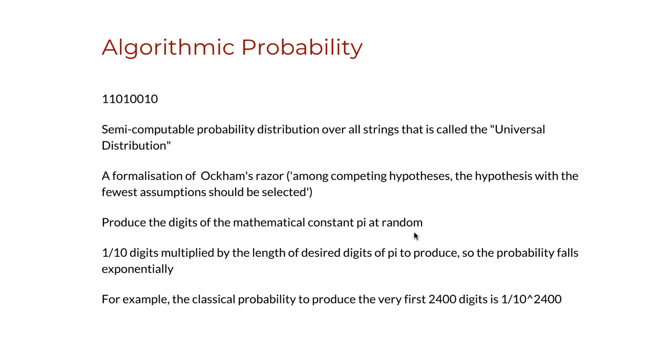The probability to produce the digits of pi is extremely small. It is 1 over 10 digits multiplied by the length of desired digits of pi to produce. So the probability falls exponentially. For example, the classical probability to produce the very first 2,400 digits is 1 over 10 to the 2,400.